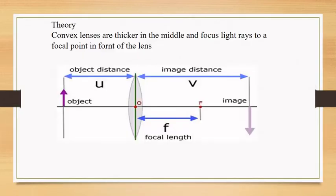Convex lenses are thicker in the middle and focus light rays to a focal point in front of the lens. Convex lenses form an image where two or more rays cross after being refracted by the lens. If the image formed is real, it is inverted and can be formed on a screen. The focal length of the lens, F, is the distance between the center of the lens and the point where the light rays are focused.